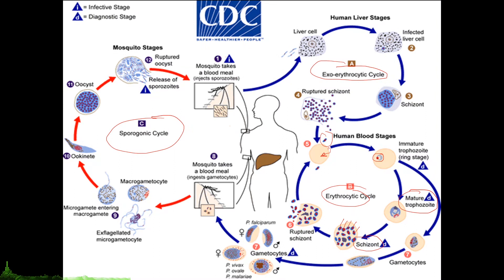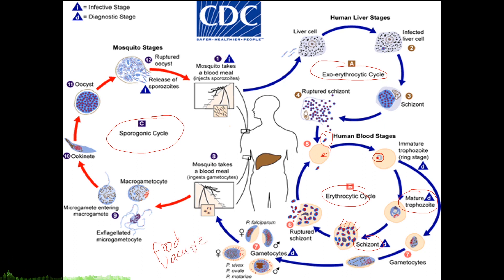The bulk of hemoglobin degradation occurs via a semi-ordered process of proteases contained within the lysosome-like organelle of the parasite termed the food vacuole. The resulting heme, which is toxic to the parasite, is crystallized into the malarial pigment hemozoin.